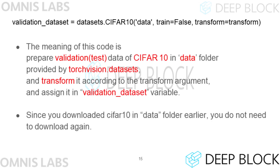Let's also look at the code that loads the test data. In the previous line, the download parameter was set to true. When the line that loads the training data is executed, a folder called data is created and the entire CIFAR-10 data is downloaded. Since the test data is also downloaded at this time, there is no need to set the download parameter to true anymore. Instead, we need to load test data, not training data, so the argument of the train parameter must be false.